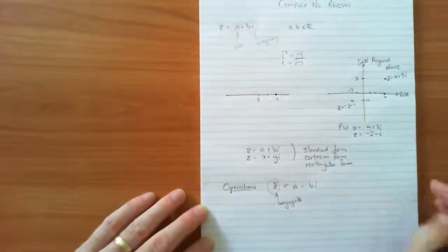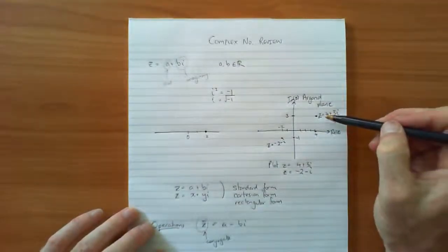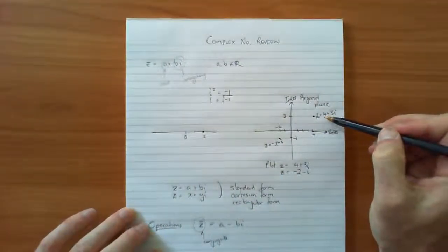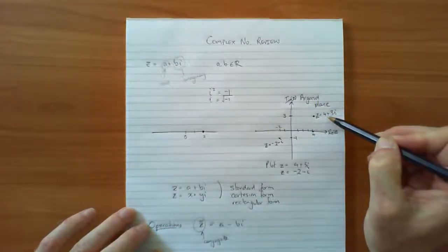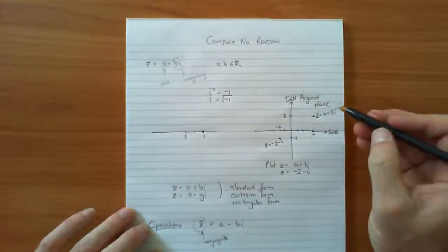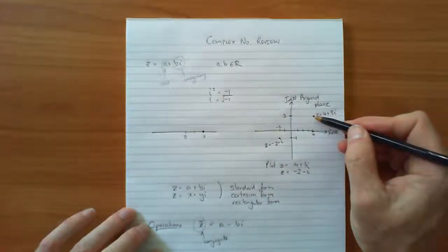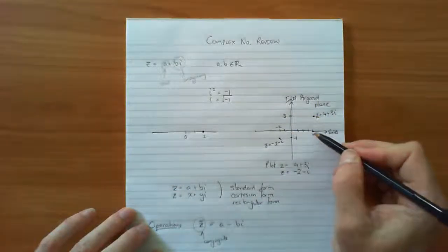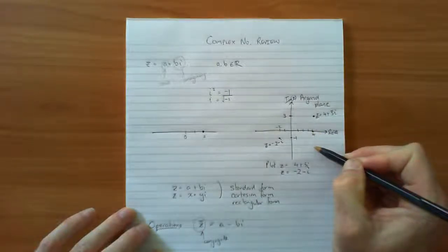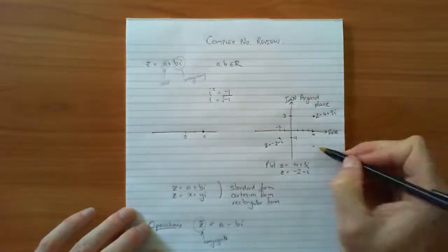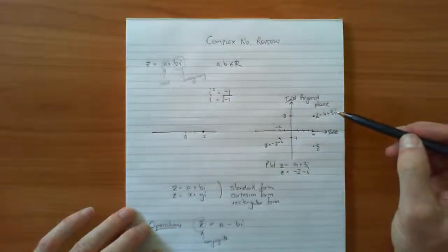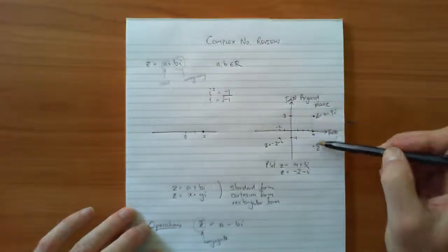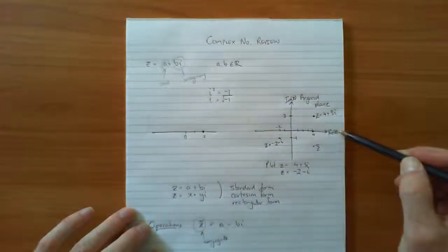Now interestingly, if you have a look at the argand plane here, we've got Z equals 4 plus 3i. The conjugate of that particular example would be 4 minus 3i, which if we look where we plot it, 4 minus 3i, the real component is still the same but the imaginary part will be down 3, so you'd be down here somewhere. So this would be Z conjugate, and in fact every time you do the conjugate, it's going to be basically reflected across the real axis.